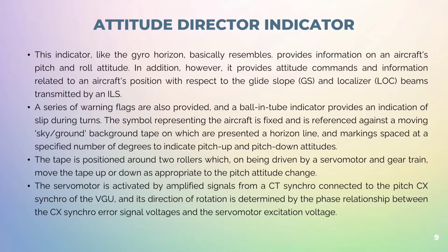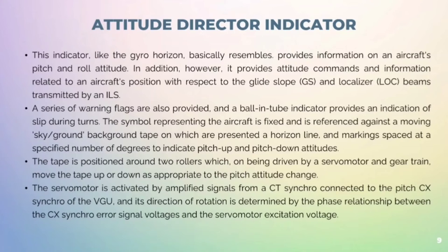Attitude Director Indicator: This indicator, like the gyro-horizon, provides information on an aircraft's pitch and roll attitude. In addition, it provides attitude commands and information related to the aircraft's position with respect to the glide slope (GS) and the localizer (LOC) beams transmitted by an ILS. A series of warning flags are also provided, and a ball-tube indicator provides an indication of slip during a turn. The symbol representing the aircraft is fixed and is referenced against a moving sky or ground-background tape on which is presented a horizontal line and markings spaced at a specified number of degrees to indicate pitch-up and pitch-down attitudes.